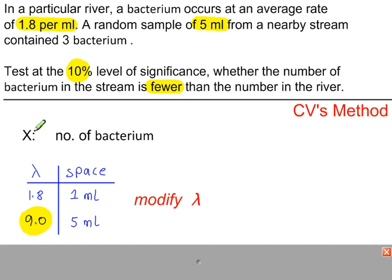X is our discrete random variable. It represents the number of bacterium. And we're going to start off with the critical values method, which is a good method if you then go on to calculate the probability of errors.